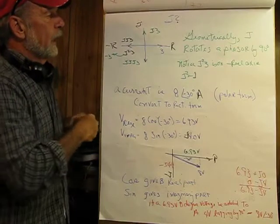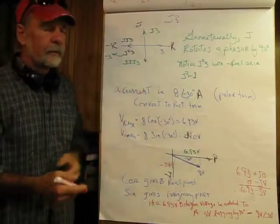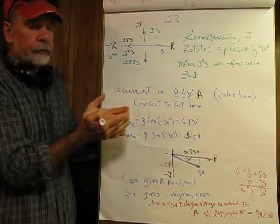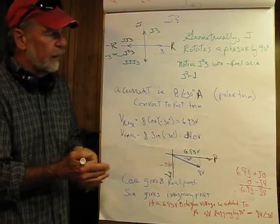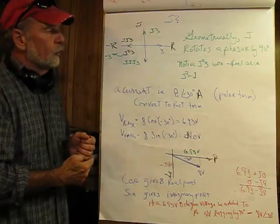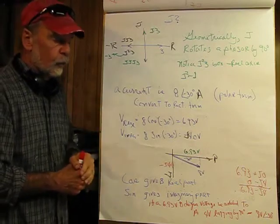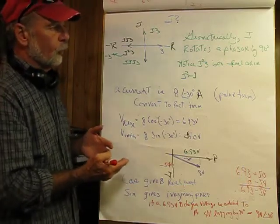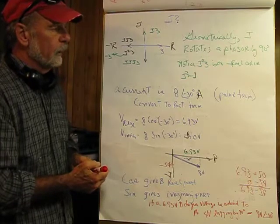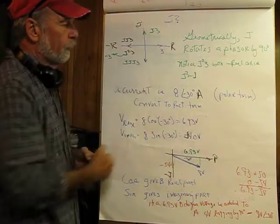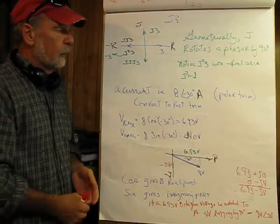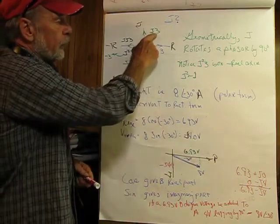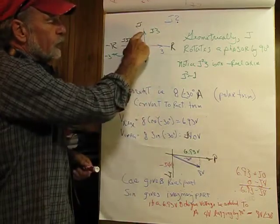We've got this j — what does it mean? I like the geometrical meaning of j, which is like i in mathematics. There are whole books written on the square root of negative one, and that's what j represents. But in the geometrical sense, all it means is we're going to rotate a phasor by 90 degrees. For example, if we had a real value of 3 — that could be 3 volts, 3 amperes, 3 ohms — and we multiply it by j, j3 is all we do: shift that 90 degrees.